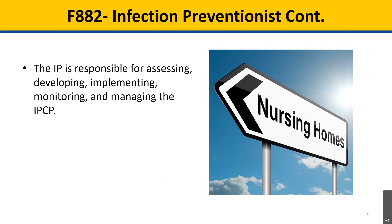I will discuss the infection preventionist role found under the infection control regulatory grouping at F-tag 882. We will also discuss the infection preventionist role on the Quality Assessment and Assurance, or QAA, committee at F-868. The regulatory language states that the IP is responsible for the infection prevention and control program, or IPCP. This includes assessing, developing, implementing, monitoring, and managing the IPCP. This does not mean that the IP cannot or should not collaborate with other staff.